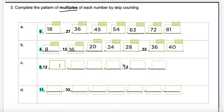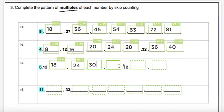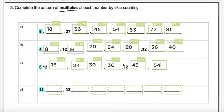Two more — skip count by six. We have six, twelve. What comes next? Add six more to twelve — eighteen. Keep going, add six more — twenty-four. Keep going — thirty. Add six more — thirty-six. The next one was done for us: forty-two. Add six more to forty-two — forty-eight. Keep going — fifty-four.